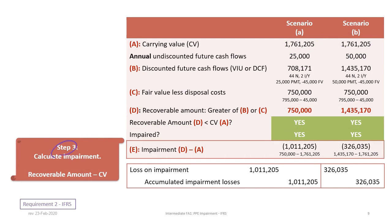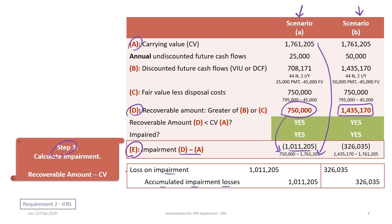Finally, our last step is to calculate the impairment and create journal entries, denoted as item E — simply the difference between the carrying value and the recoverable amount. Under scenario A, the recoverable amount is $750,000 and the carrying value is $1,761,205, resulting in impairment of $1,011,205. The journal entry is: debit Loss on Impairment, credit Accumulated Impairment Losses. Under scenario B, $1,435,170 minus $1,761,205 gives impairment of $326,035, with the same journal entry accounts but an amount of $326,035.